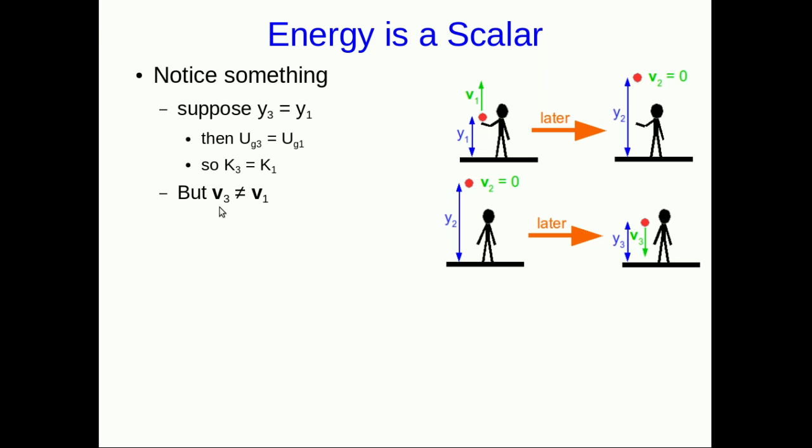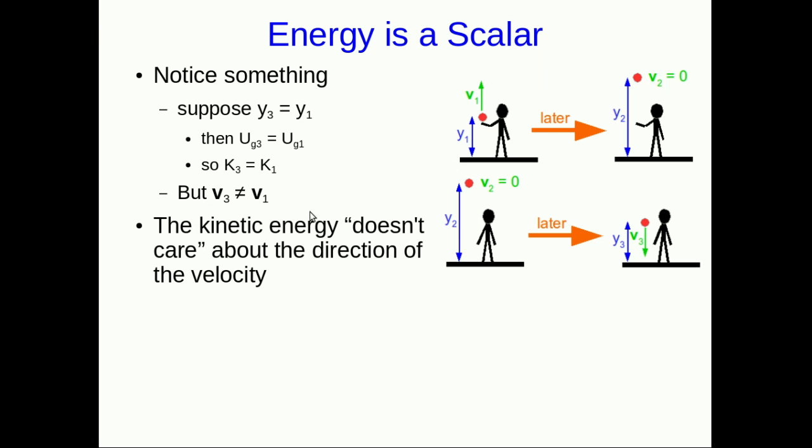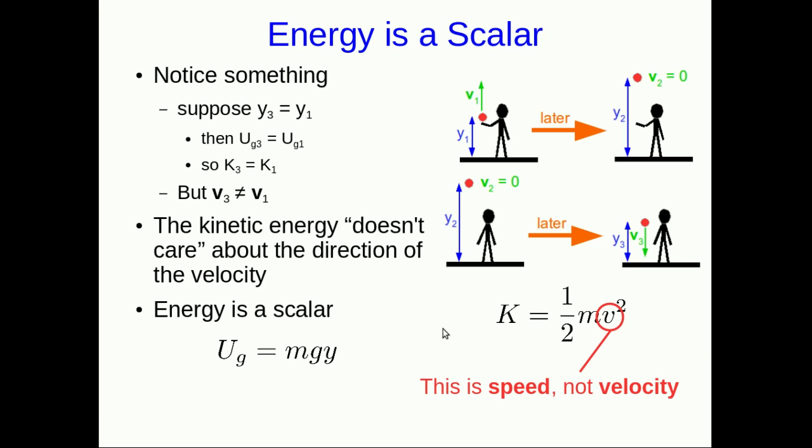But notice the velocities v3 and v1 are not the same because they're in opposite directions. This is telling you that while those velocities are in opposite directions, the speeds are the same, because kinetic energy doesn't care about direction—it only cares about speed. Energy is a scalar. When I write it this way, note there's no vector symbol on that v; this is a scalar expression. That v is a speed, not a velocity. Similarly, the y in gravitational potential energy is the vertical component of position, and components themselves are scalars.